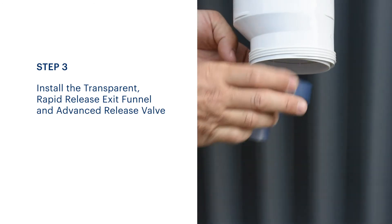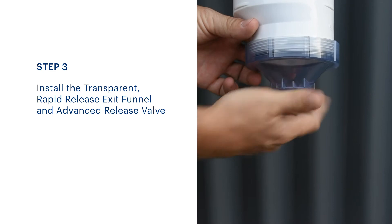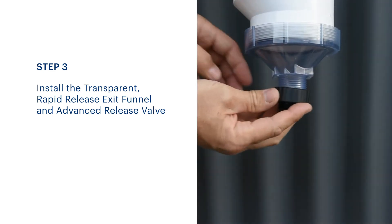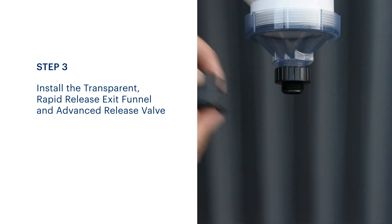Install the transparent rapid release exit funnel, ensuring the O-ring is sealed correctly. It should be screwed up firmly to compress the O-ring. Next, attach the reducing adapter to the bottom of the transparent rapid release exit funnel.